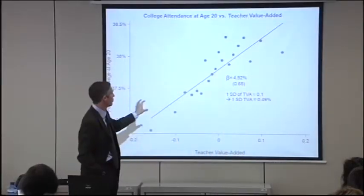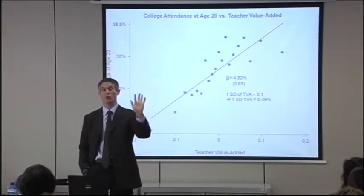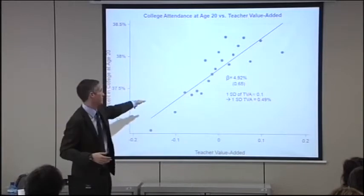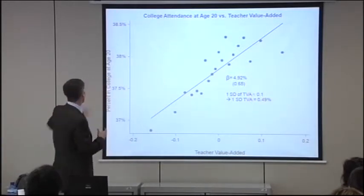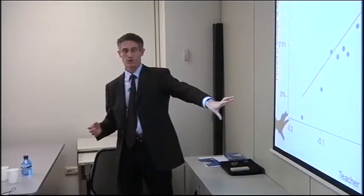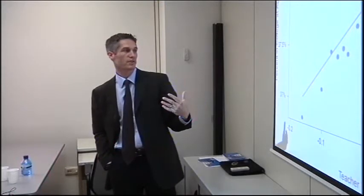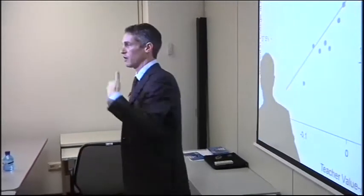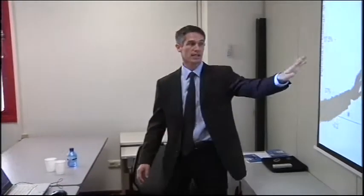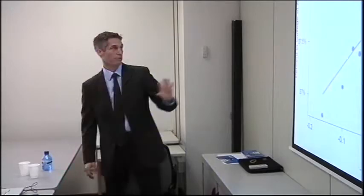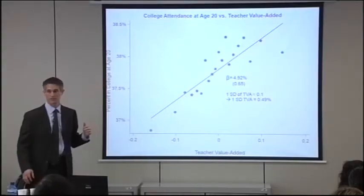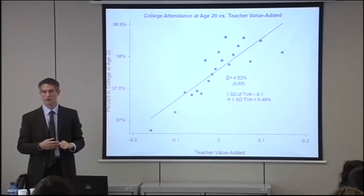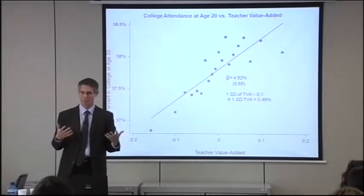Each point is 5% of the data — we break up the data into 20 quantiles to show the linearity or non-linearity, and the red line is just the regression line. This shows percent of people attending college on the y-axis and value added on the x-axis. A standard deviation of value added is roughly the difference between 0 and 0.1, translating to about a half a percentage point increase in the probability of going to college over a mean of a little over 37%. That moves the college attendance rate from about 37.5% to 38%, which may not seem like much, but it's going to be worth a lot of money.